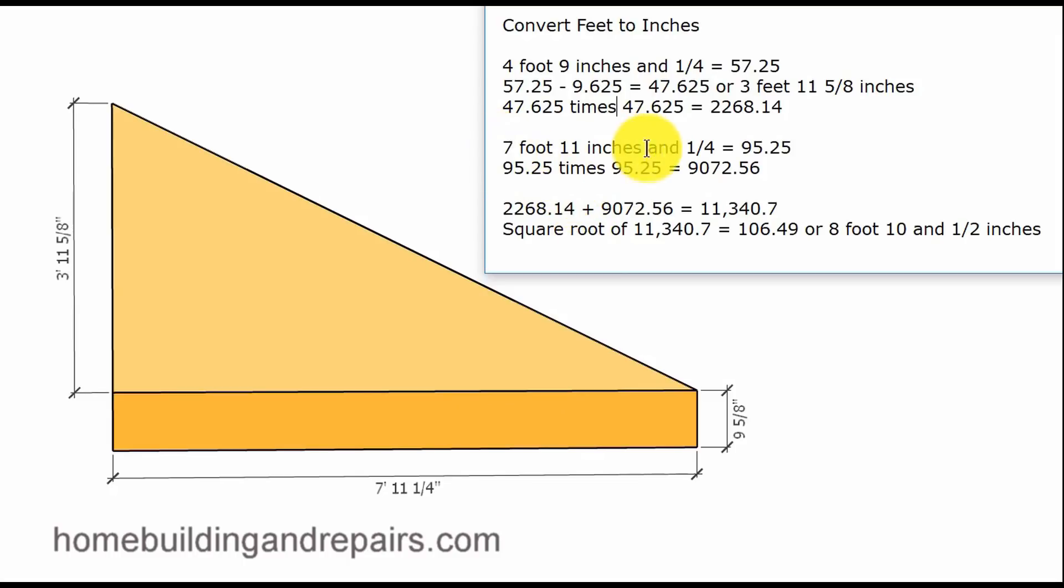If we convert this number to a decimal this is what we get. Multiply it times itself gives us nine thousand seventy two point five six. Add these two numbers together which would be this and this.